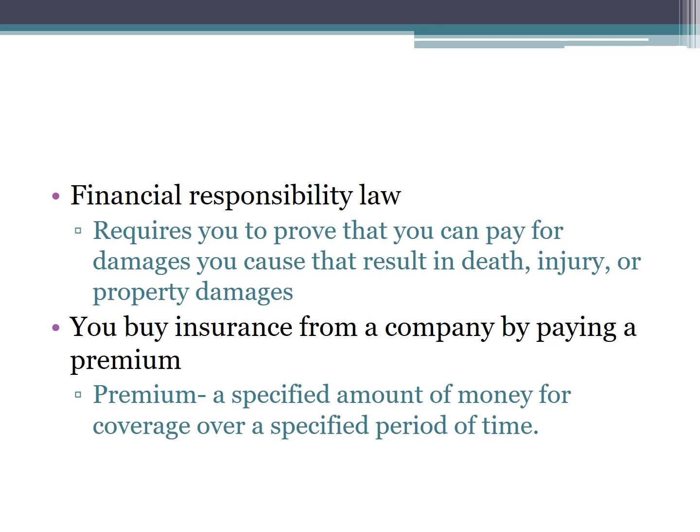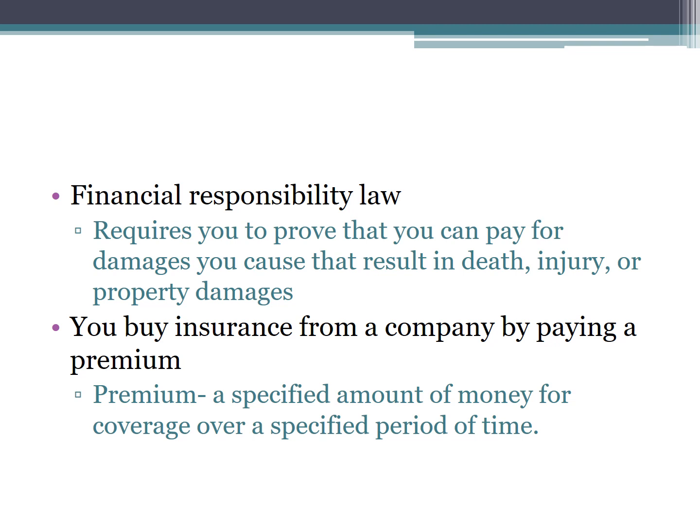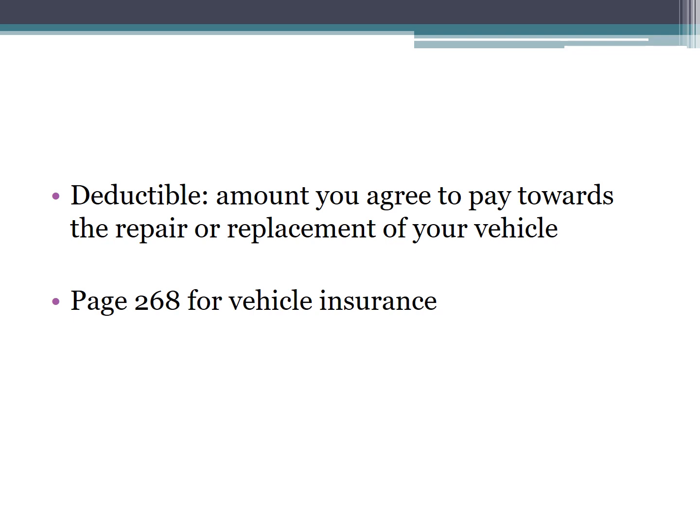Insurance is more expensive for young males and older people. A policy is what your coverage is — there are many different kinds. Liability insurance covers others when you are at fault. Collision insurance covers damages to your own vehicle. A deductible — often $500 or $1,500 — is how much you pay for damage before the insurance takes over.